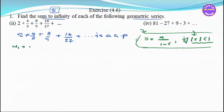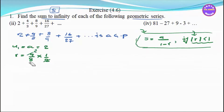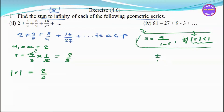For this series, the sum to infinity: a is equal to 2, r is equal to 4/3 divided by 2, which gives r equal to 2/3. The modulus of r is 2/3, which is positive.